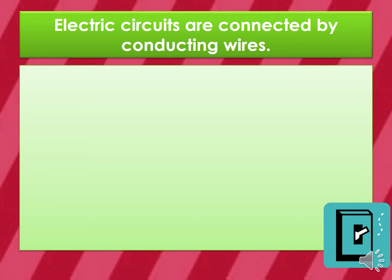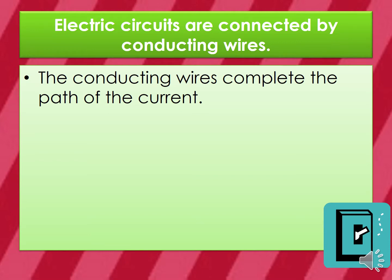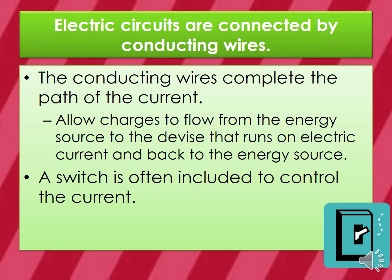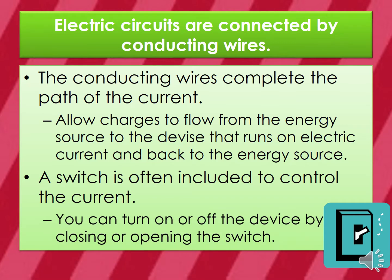Electric circuits are connected by conducting wires — meaning made of a conductor, typically copper or some other form of metal. The conducting wires complete the path of the current, allowing charges to flow from the energy source, like a battery, to the device that runs on electric current, and back to the energy source. A switch is often included to control the current — you can turn the device on or off by closing or opening the switch.